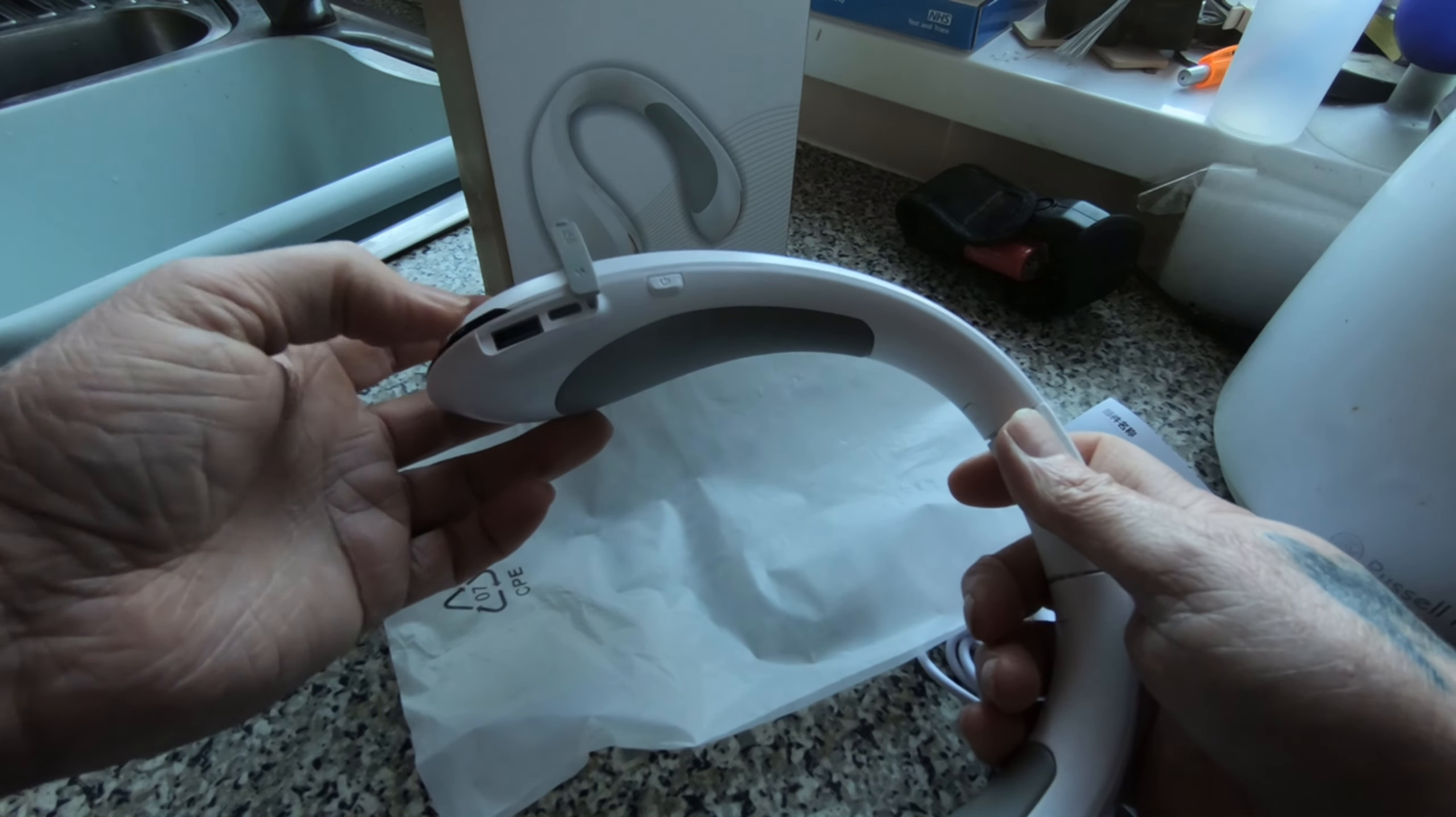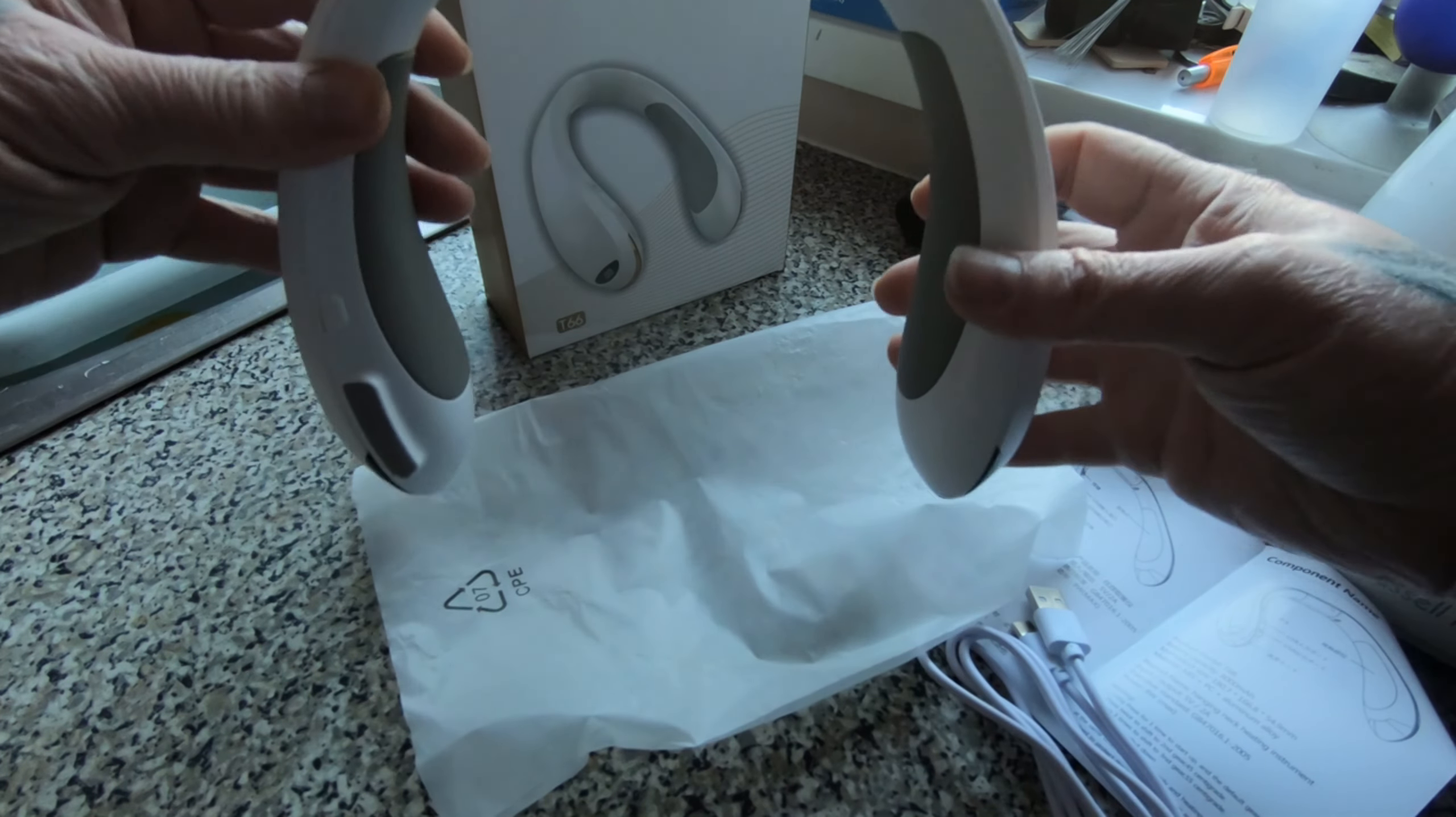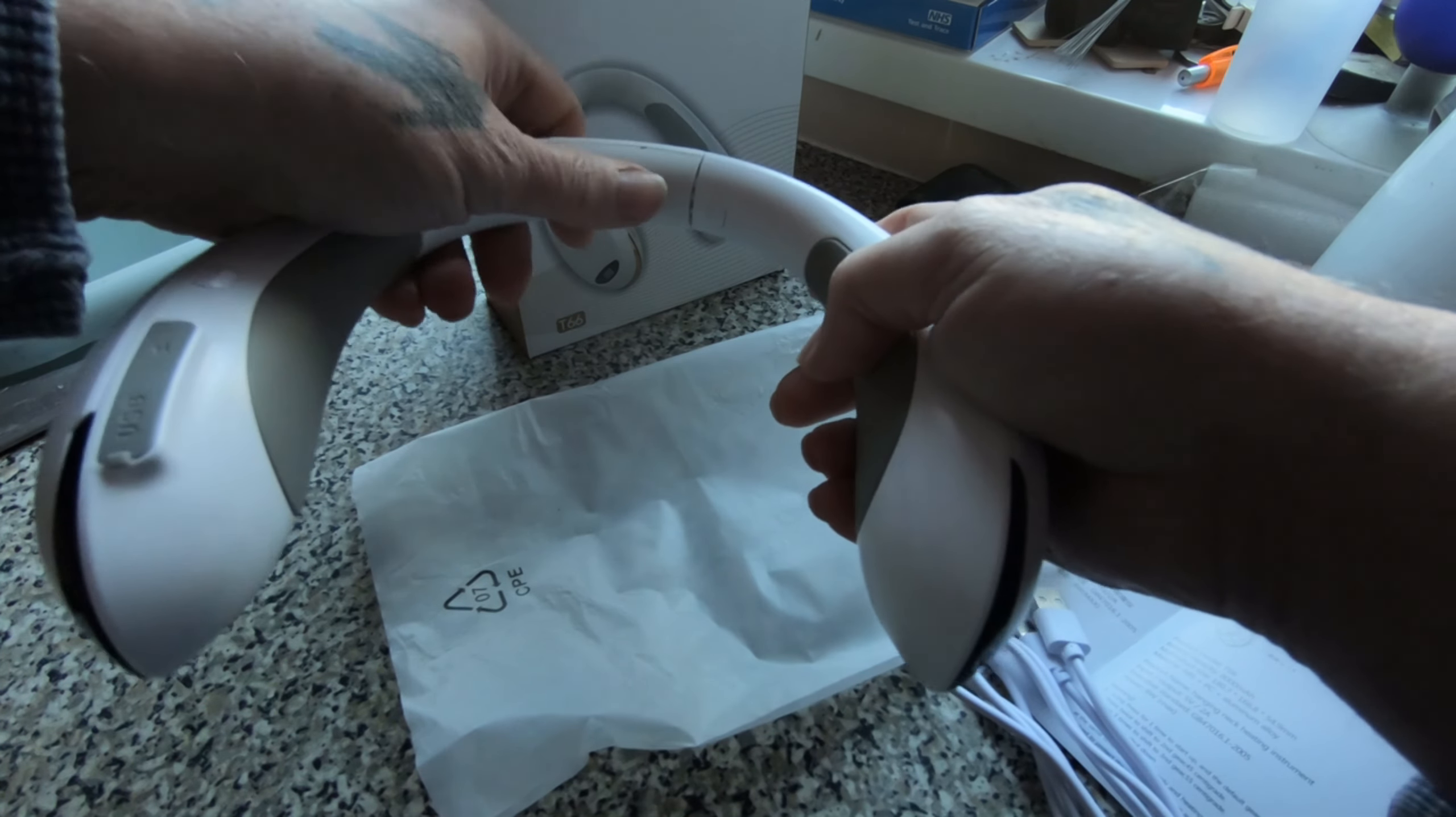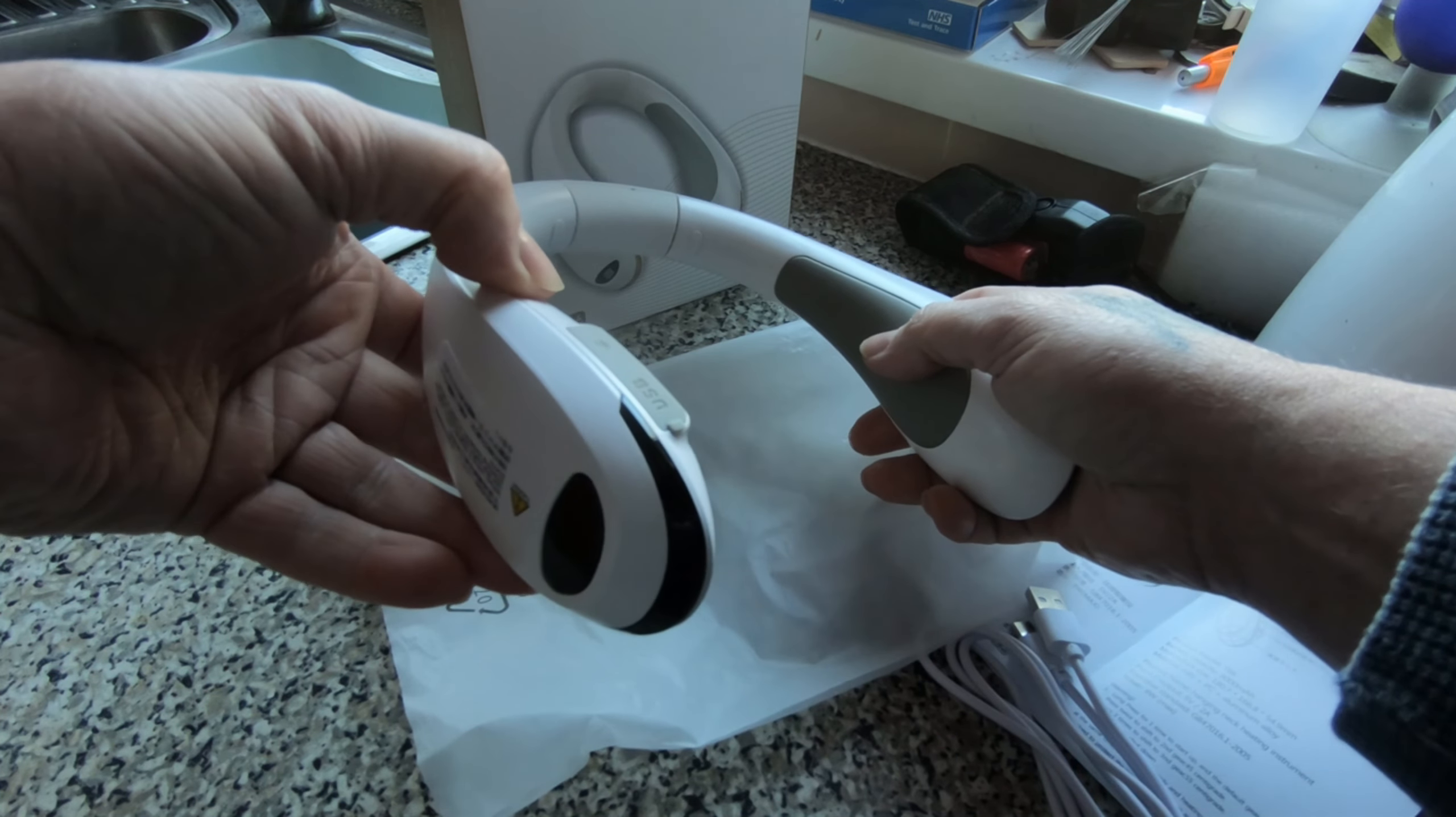Yeah here we've got the power button under here. We've got the charging port and we've also got a USB power outlet so you could charge your phone I suppose if you're out and about wearing your neck piece. It's made of plastic and these are plastic too, it's all plastic. Sort of feels slightly rubberized but I don't think it is.